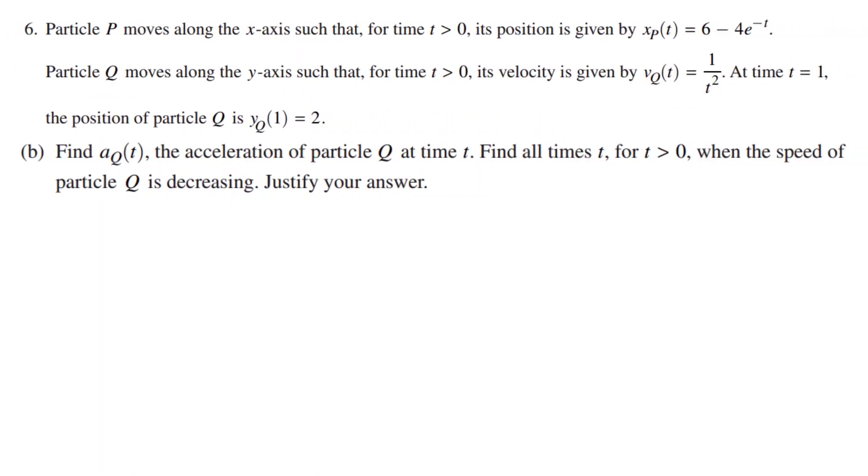Part B starts similarly. Find aq of t, the acceleration of particle Q at time t. Find all times t for t greater than 0 when the speed of particle Q is decreasing. Justify your answer. aq of t equals vq prime of t which equals negative 2 times t to the power of negative 3.